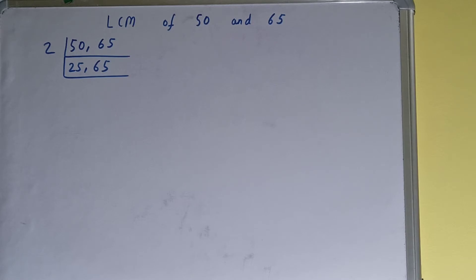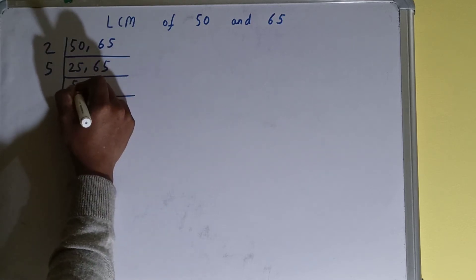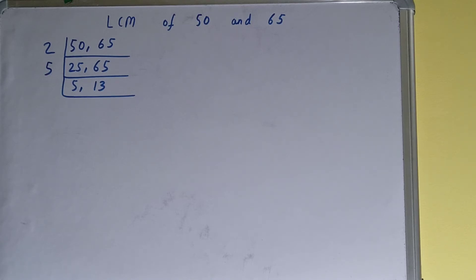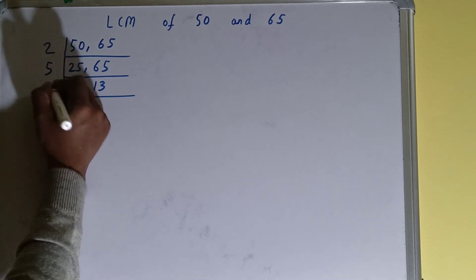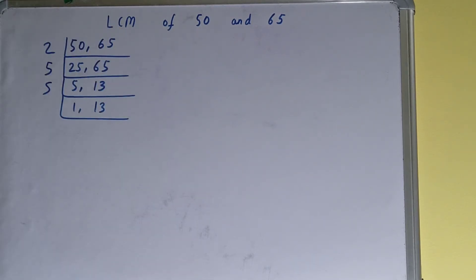And both the numbers can be divided by 5, so we'll divide and we'll be left with 5, 13. Now again, if we check, is any of the numbers divisible by 5? Only the first number is divisible, so we'll divide and we'll be left with 1, 13.